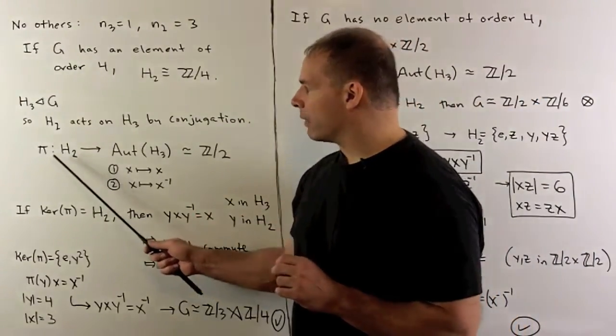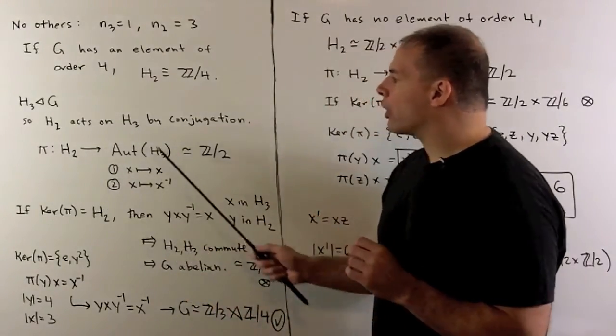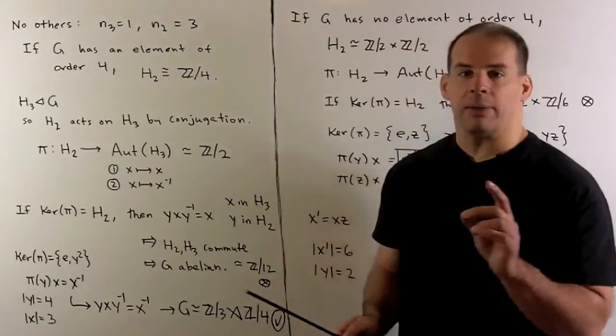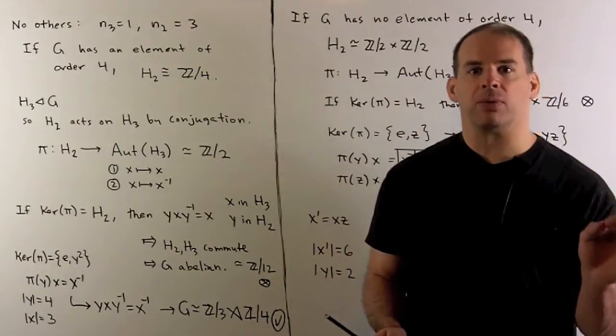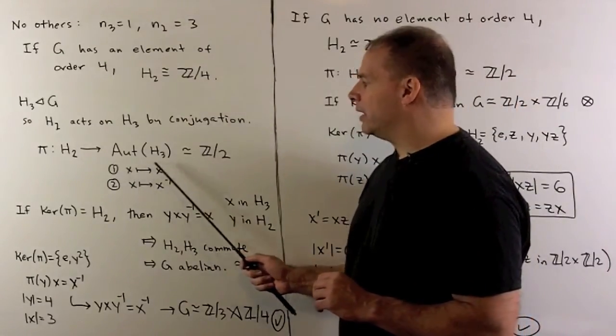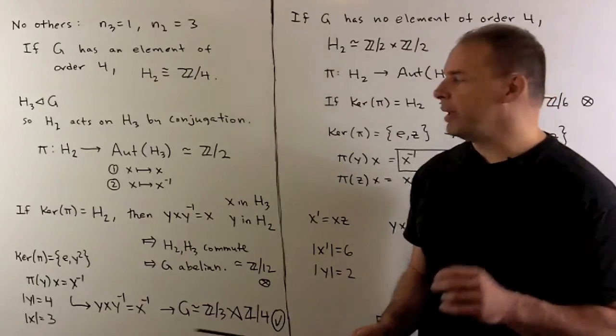I'm going to restrict conjugation just to elements in one of our Sylow 2 subgroups. So that's going to give me a homomorphism, called pi, from our Sylow 2 to the automorphism group of our Sylow 3. Now, the automorphism group of Z mod 3 has two elements. We can either send every element to itself, the identity map, or we send every element to its inverse.